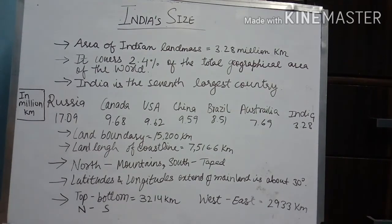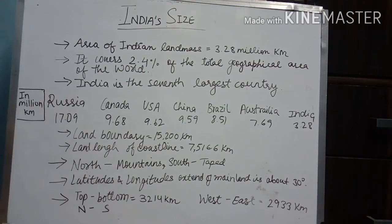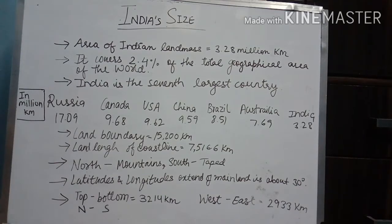The next point is land boundary. India's land boundary is 15,200 kilometers long. The coastline of India, including the islands, is 7,516 kilometers long.